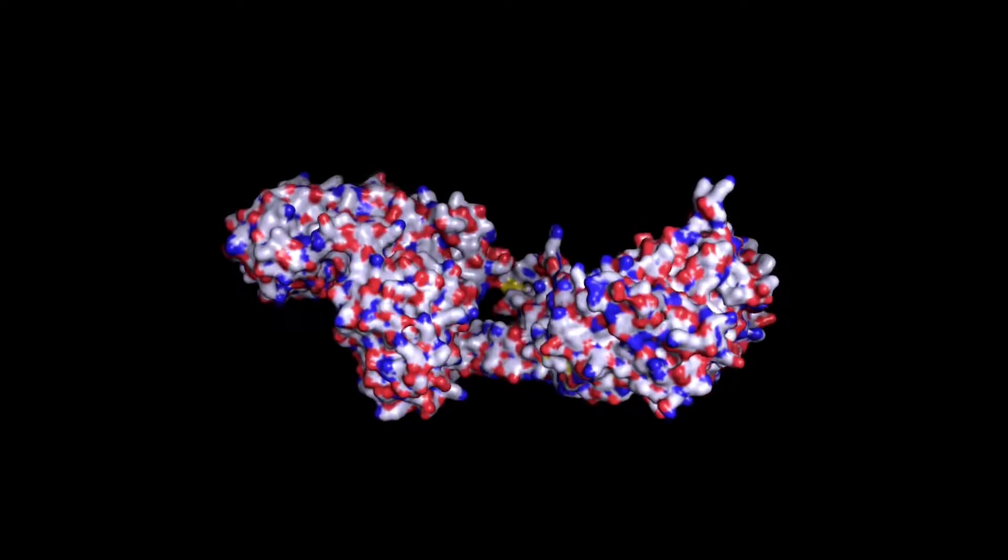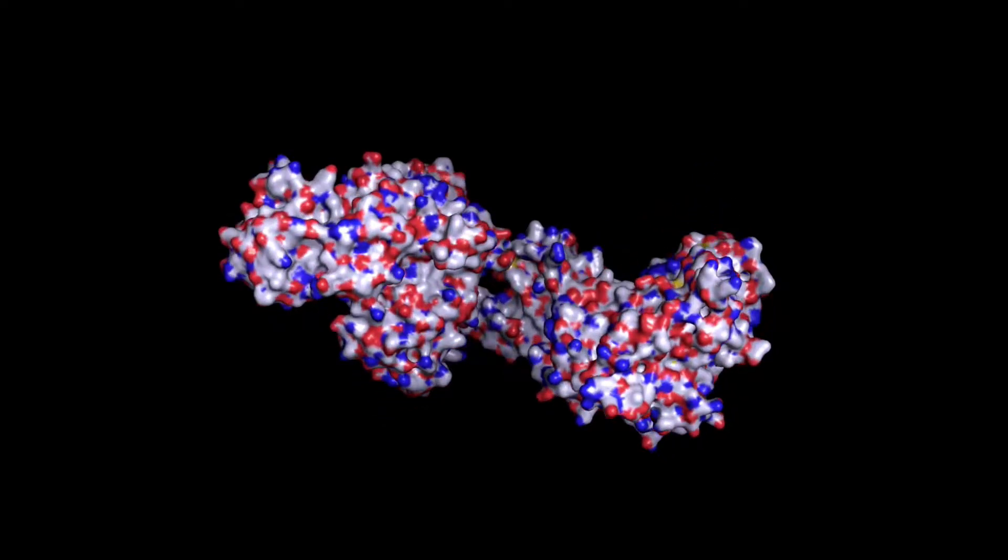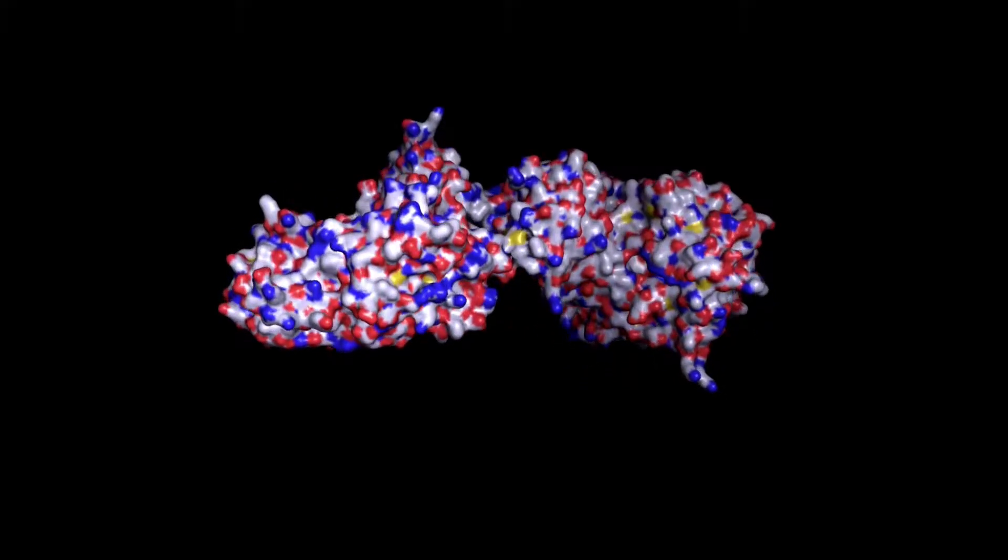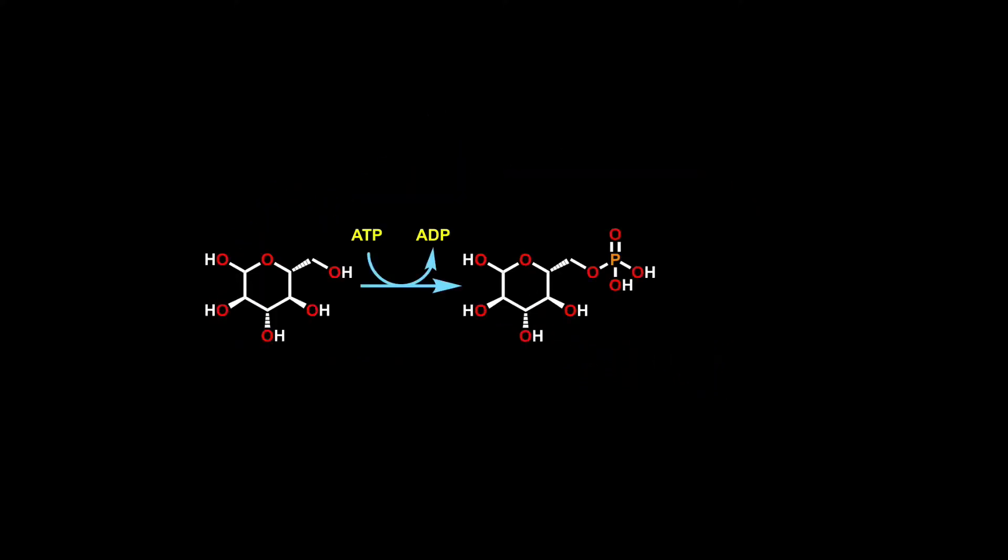Hexokinase is an enzyme, so it catalyzes a chemical reaction. And the kinase part of the name means it adds a phosphate to something. This is the overall reaction shown in a way that you're probably used to seeing it. Glucose reacts with ATP, and a phosphate group replaces the hydrogen on one of the OH groups.